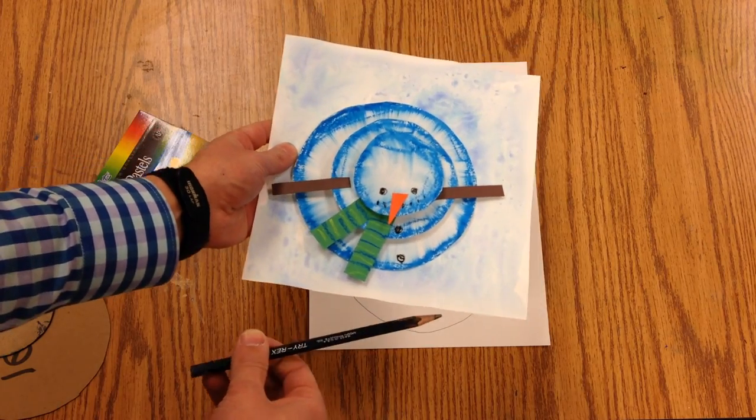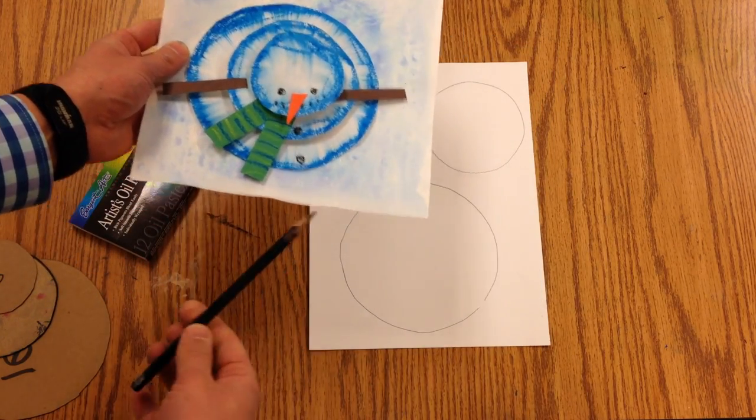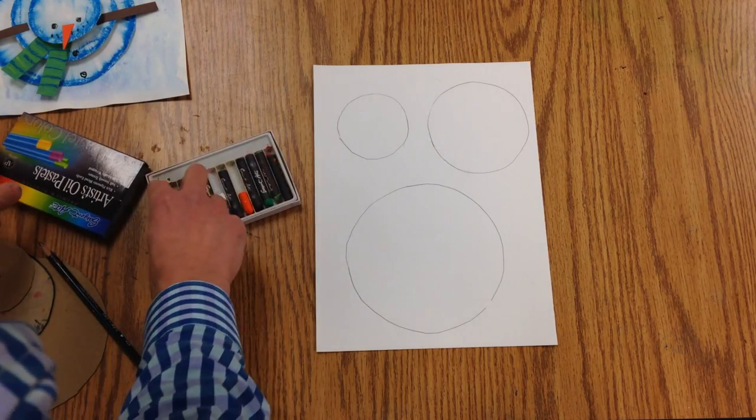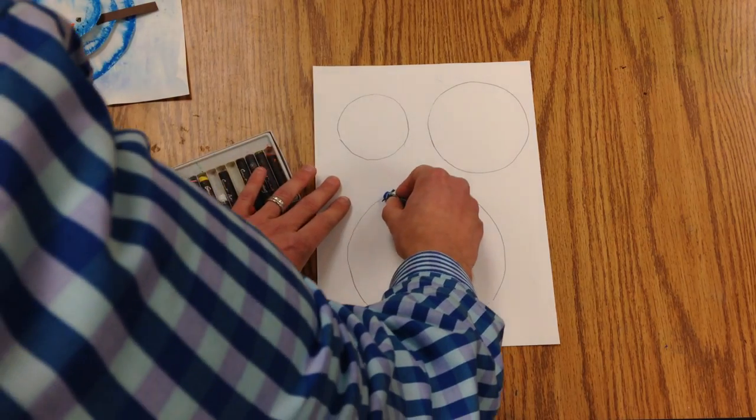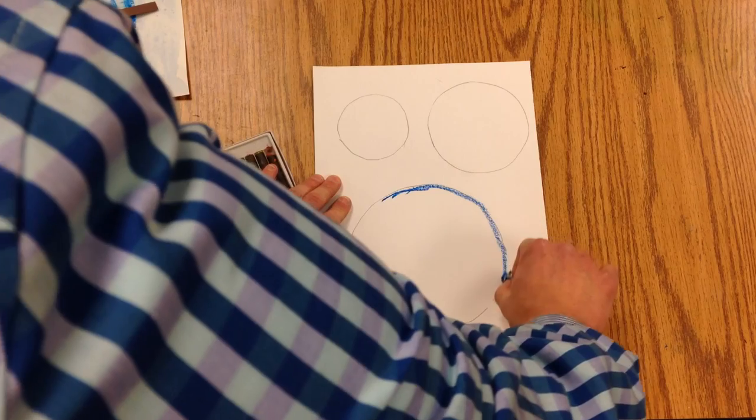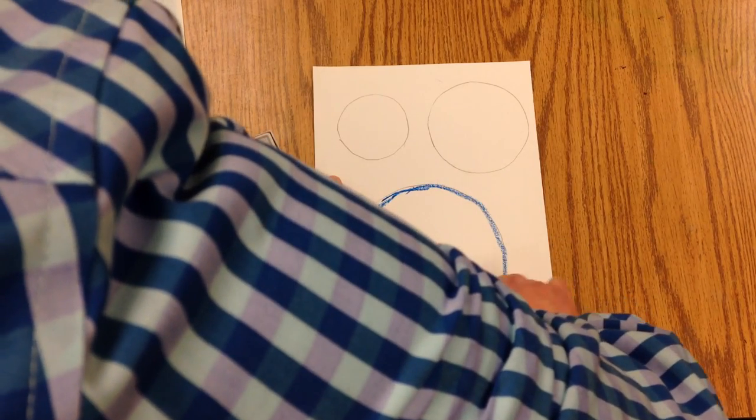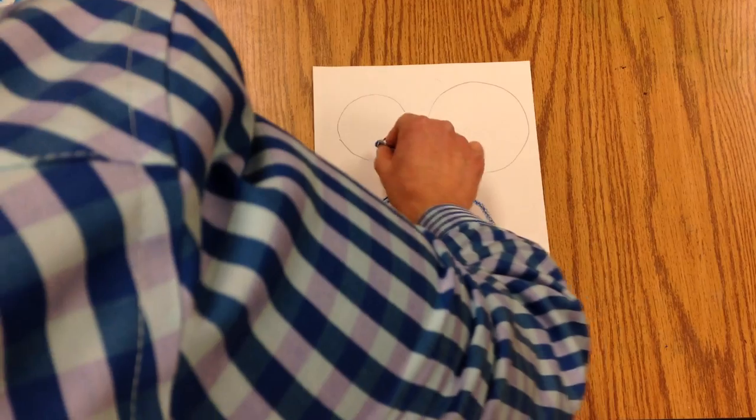We are going to use some oil pastels so we're going to use our fingers to smudge them. So first we're going to come in, take a blue pastel and just make a thin line around the edge of this circle, and then we're going to do that on this one too and here.